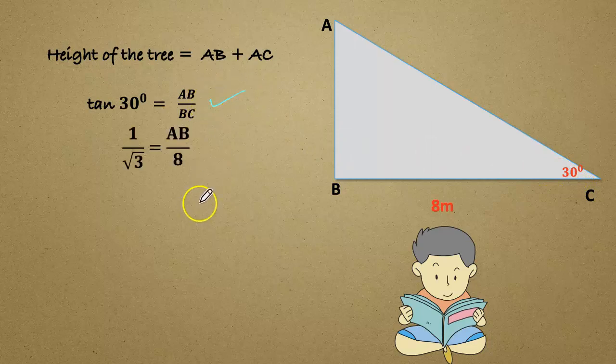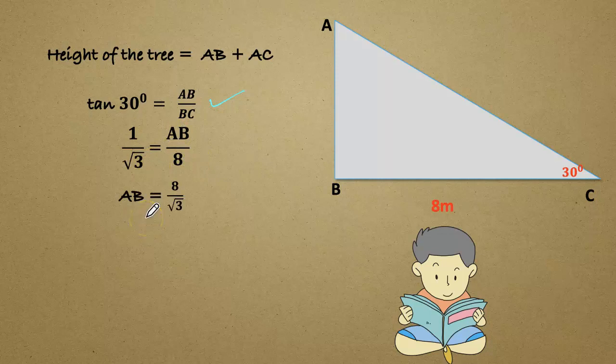The value of tan 30 we know 1 by root 3. So 1 by root 3 equals AB by 8. Cross multiplying, we get AB equals 8 divided by root 3.